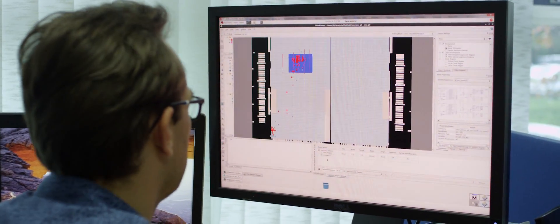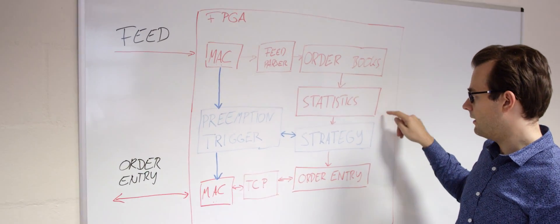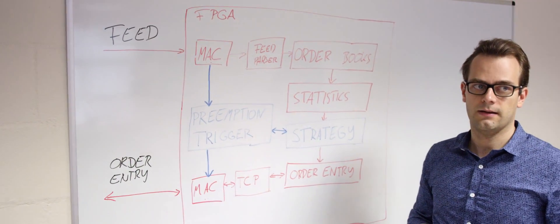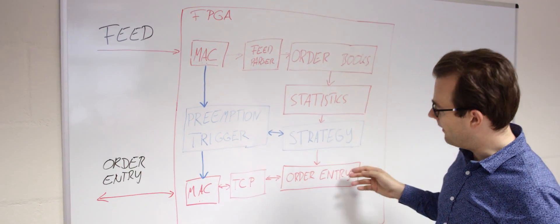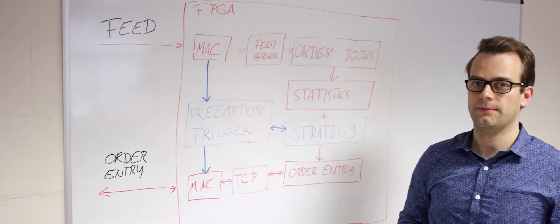You have a feed parser, you have the order books, you build some statistics based on them. You have a strategy that determines which orders you want to place and then order entry, TCP and MAC to communicate with the exchange.